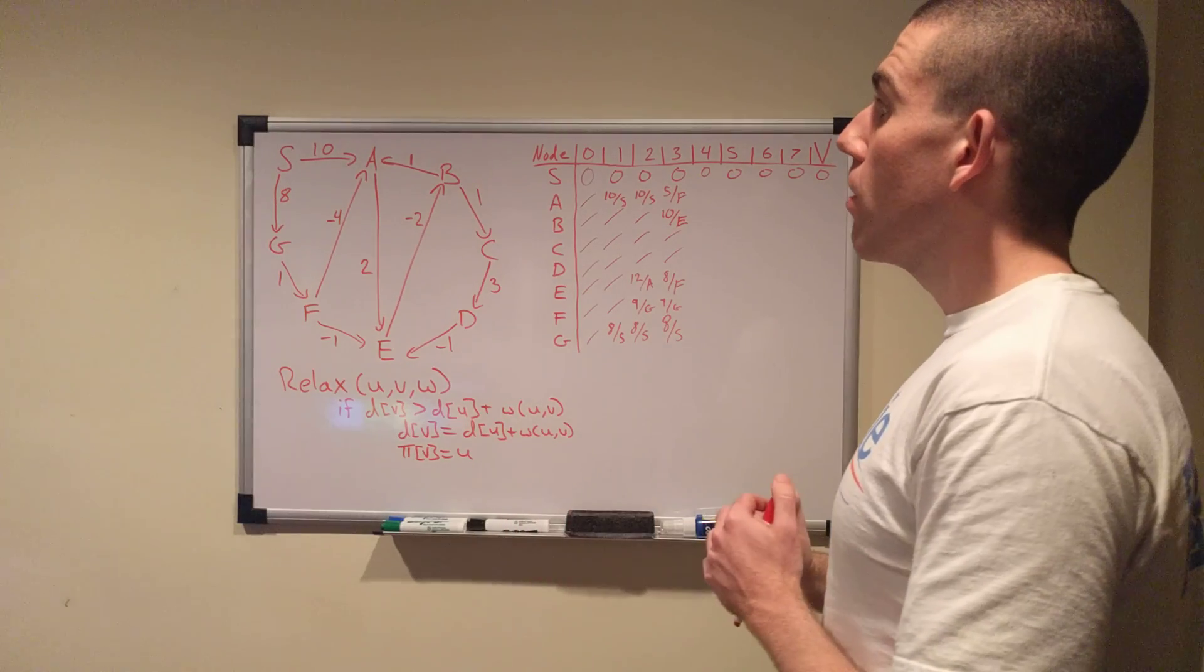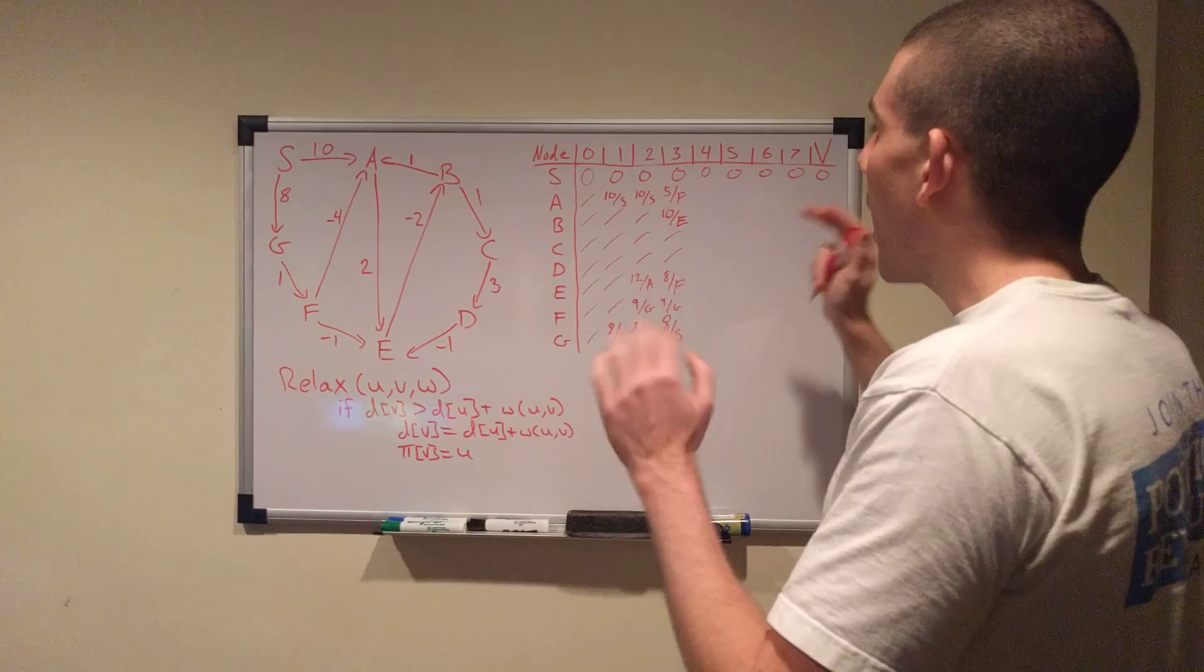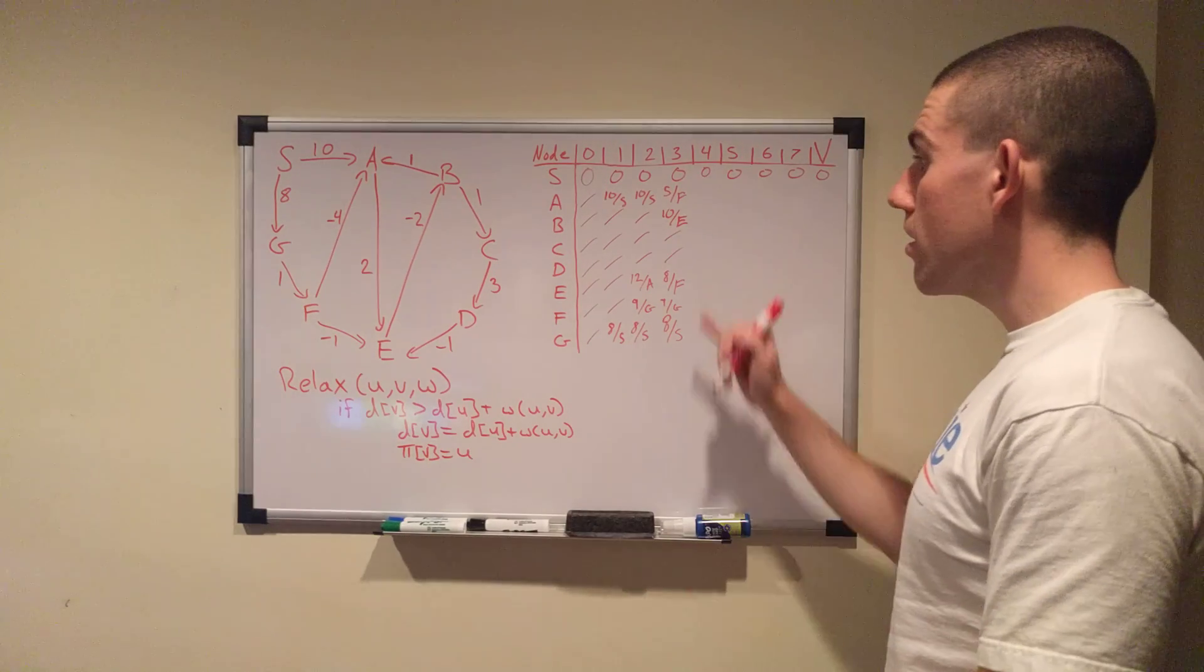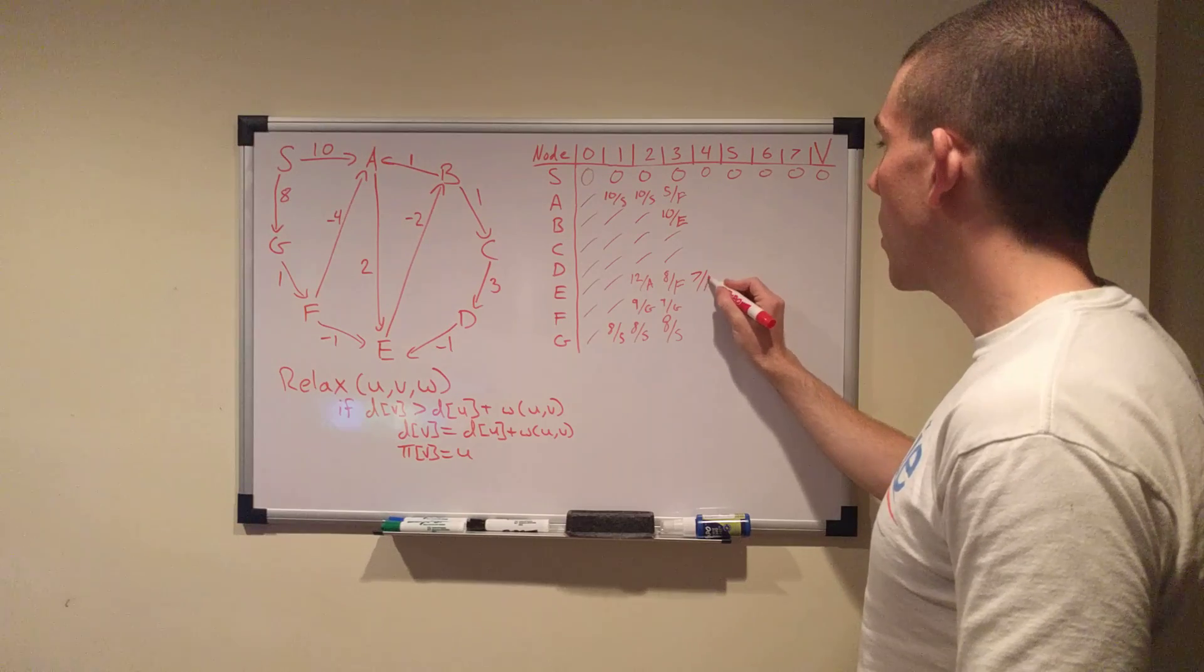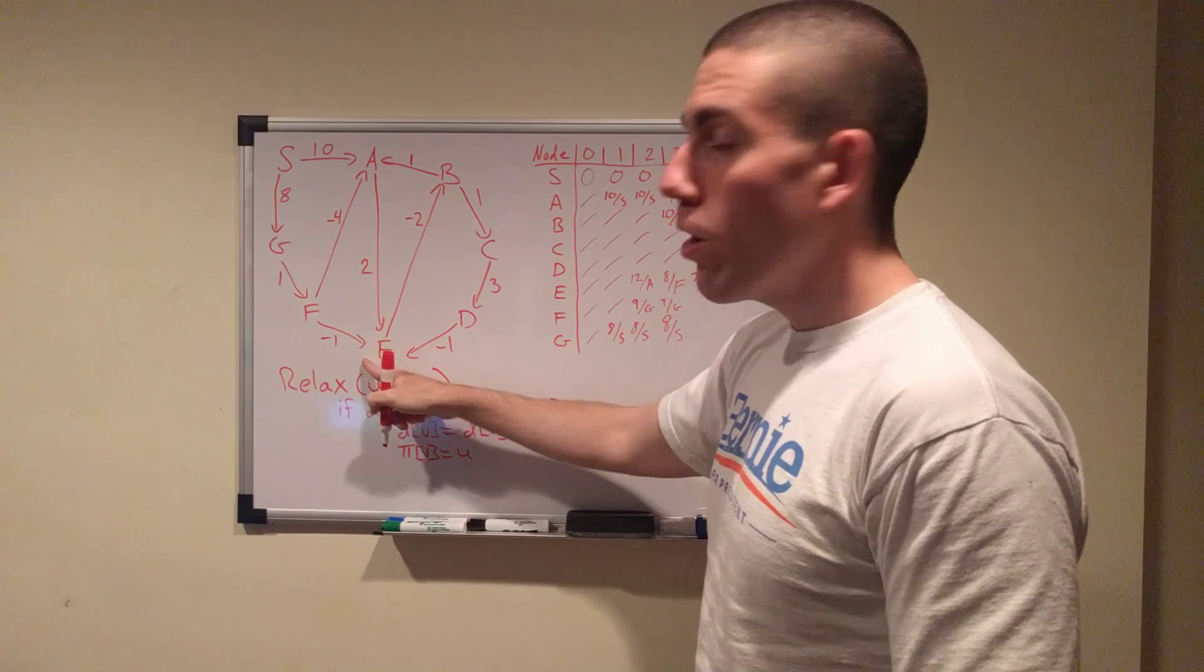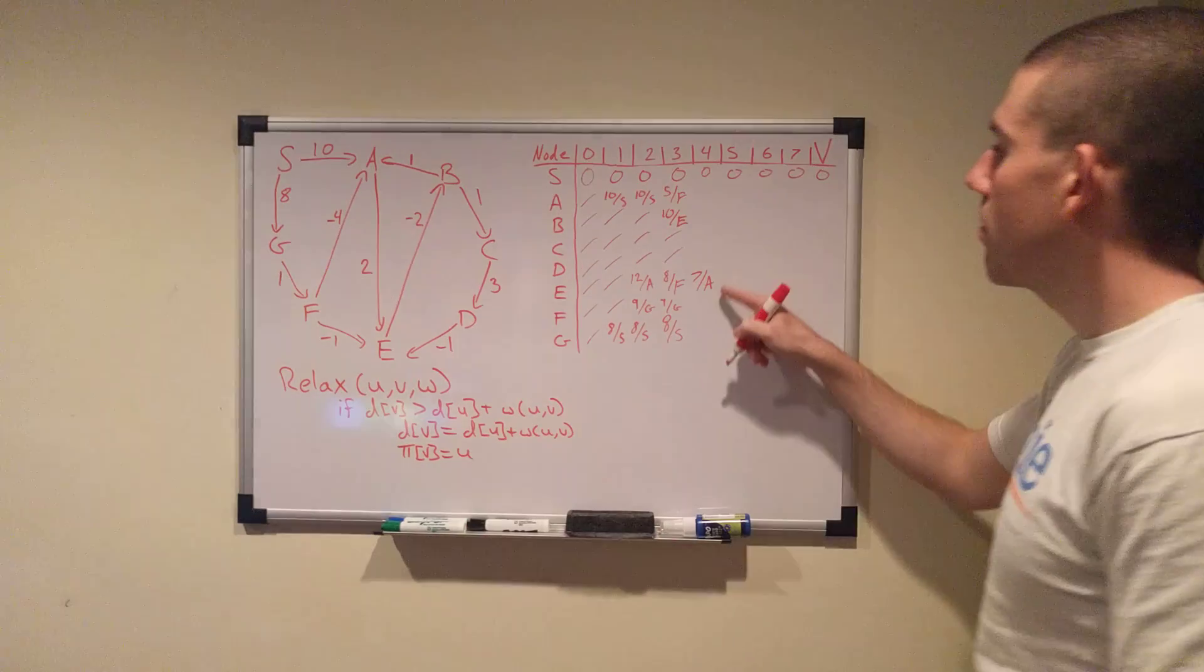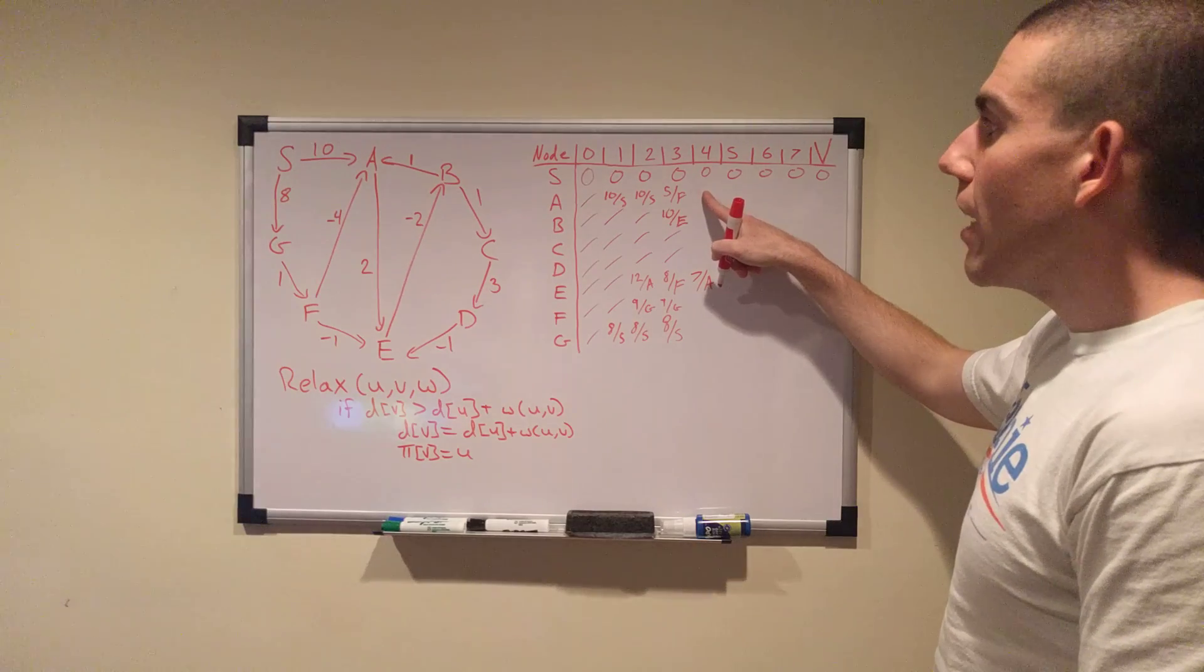So, fourth iteration. A is now 5. So, A has a cost of 5. We obviously, we assume we relaxed S and nothing changed. A has a cost of 5. So, now that means we can use A's only outgoing edge to get to E at a cost of 7. What's E's current cost? 8. So, 7 beats 8. 7 from A, meaning that what we just found is that it's actually cheaper. You could take this negative 1 road to get to E from F, or you could go up here and then come back down. And it's cheaper. So, that's what we're doing now. And that's A's only outgoing edge. So, A is done.